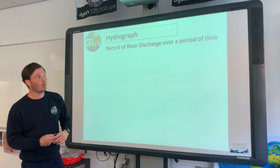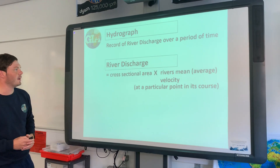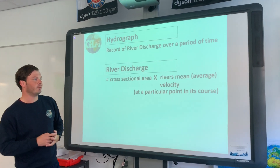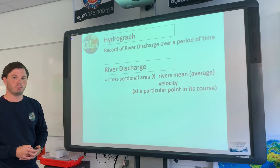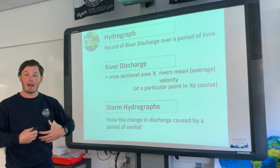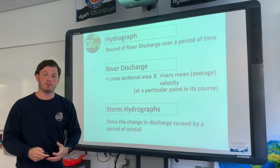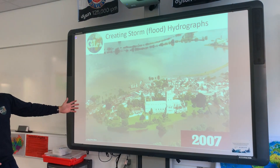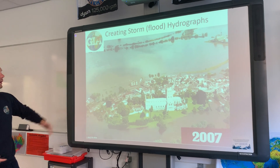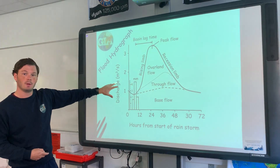A storm hydrograph records a river's discharge over a period of time. River discharge equals cross-sectional area times the river's mean average velocity — that's the speed of the river. We're going to show how a flood, or how high amounts of rainfall, could lead to increased flood risk for certain areas, such as Tewkesbury. Here we have the Tewkesbury flood from 2007, which I'll discuss in one of my future videos, and we're going to look at and understand how one of these storm hydrographs is put together.